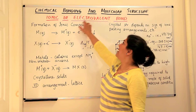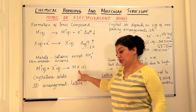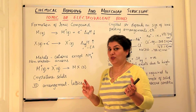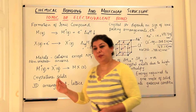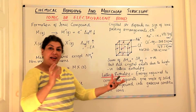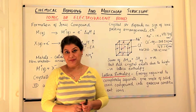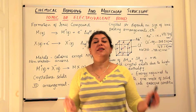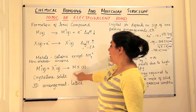Coulombic forces hold these ions so strongly together that the resultant is a solid. Such compounds are known as electrovalent compounds and such a bond is known as an electrovalent bond. When we use the word bond, we actually mean a shared pair of electrons in the case of covalent bonds. So an electrovalent bond is not actually a bond — it is only ions staying together due to Coulombic forces of attraction.